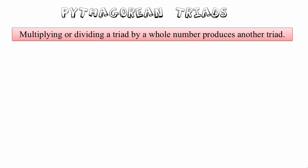What is useful is that if we multiply or divide a triad by any whole number, we produce another triad. In other words, we produce another three sides which satisfy Pythagoras's formula. Let's see how this works. Let's suppose our triad is a, b, and c. We're going to multiply it by some whole number, let's call it k. So the three sides become ka, kb, and kc.